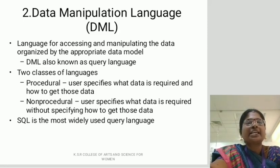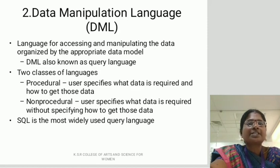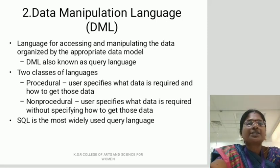Data manipulation language, or DML, also known as query language, is the language for accessing and manipulating data organized by the appropriate data model. There are two types: procedural, where users specify what data is required and how to get it, and non-procedural, where users specify what data is required without specifying how to get it. SQL is the most widely used query language.